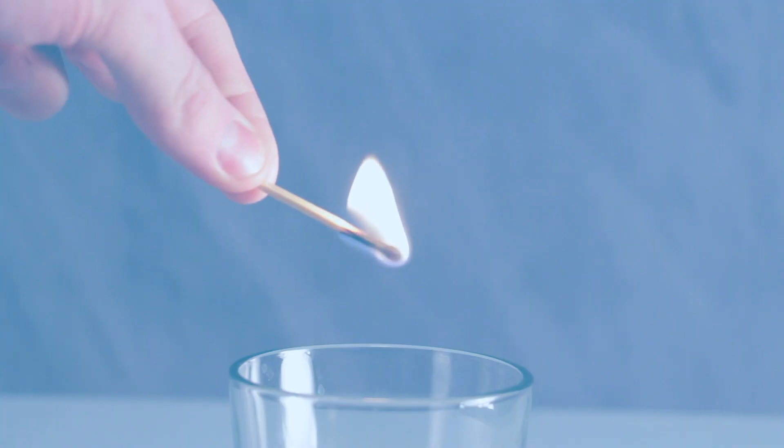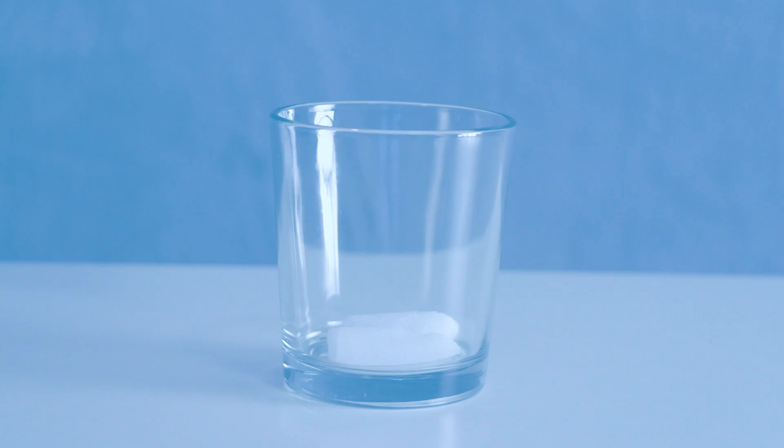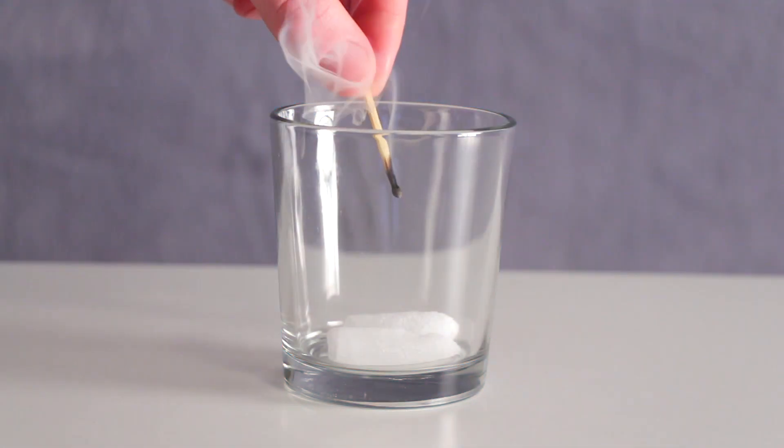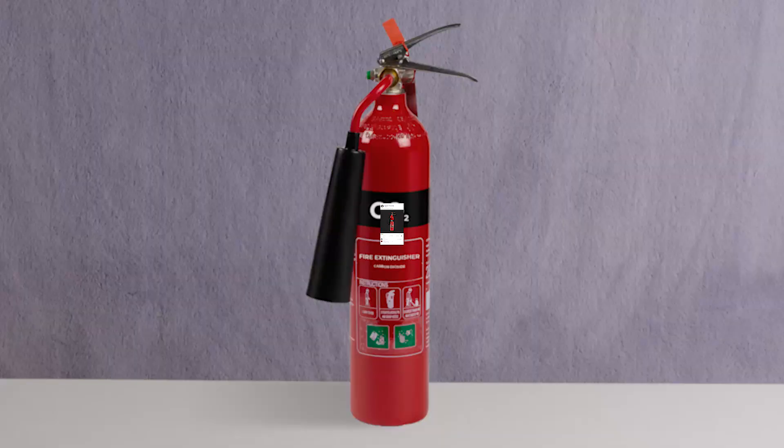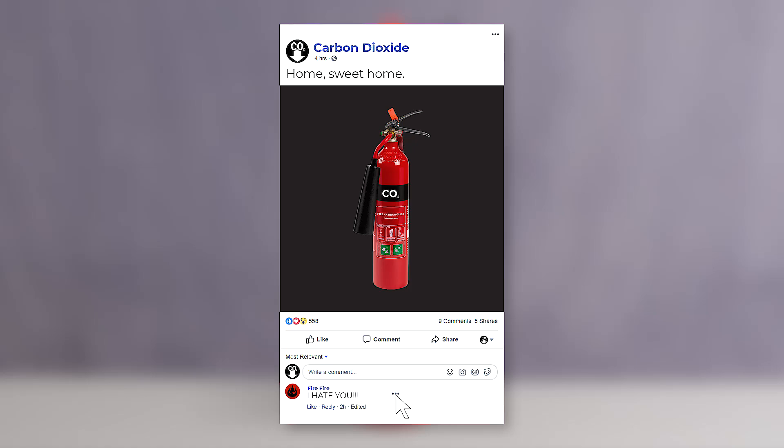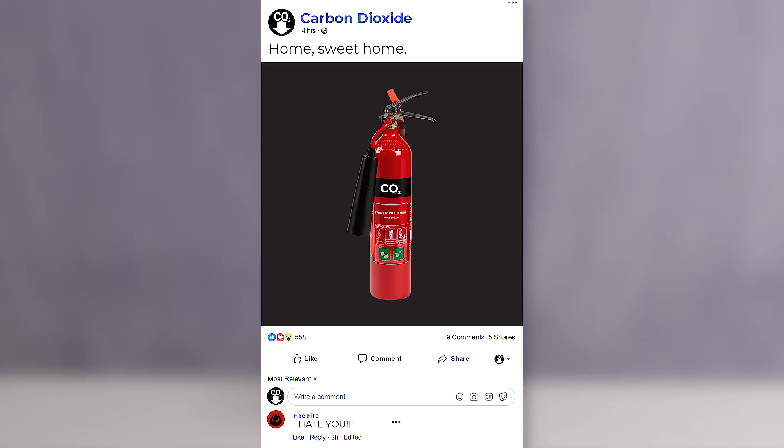This is because your typical flame needs oxygen to burn. The dry ice gives off carbon dioxide, which displaces the oxygen, leaving the flame unable to continue burning. It's why they use CO2 in a lot of fire extinguishers. In most cases, CO2 is fire's worst enemy. They've even blocked each other on all social media.